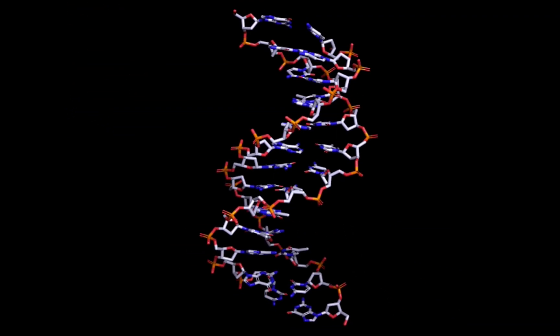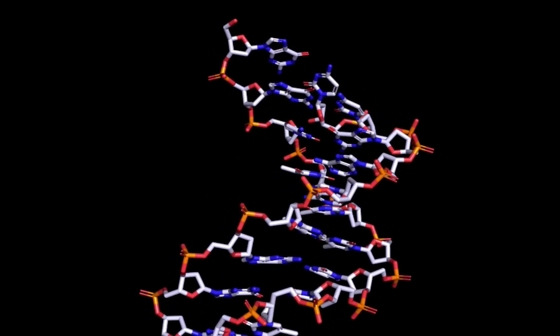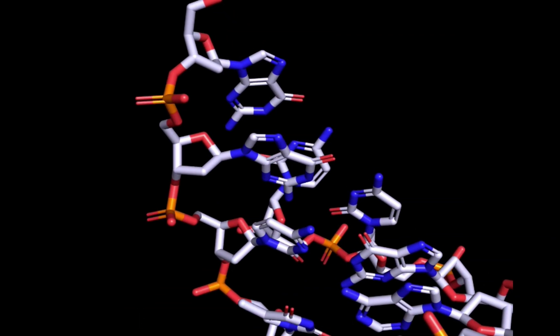The sugars and phosphate groups bond covalently to make up the backbone of the DNA molecule. And we can see the alternating units here. Phosphate, sugar, phosphate, sugar.